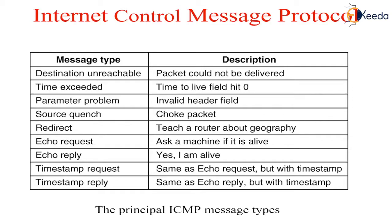The source quench message is rarely used because when congestion occurs, these packets tend to add more fuel to the fire. The redirect message is used when a router notices that a packet seems to be routed wrong; it tells the sending host about the probable error. The echo request and echo reply messages are used to see if a given destination is reachable and alive. The timestamp request and timestamp reply are similar, except that the arrival time of the message and departure time of the reply are recorded — this facility is used to measure network performance.